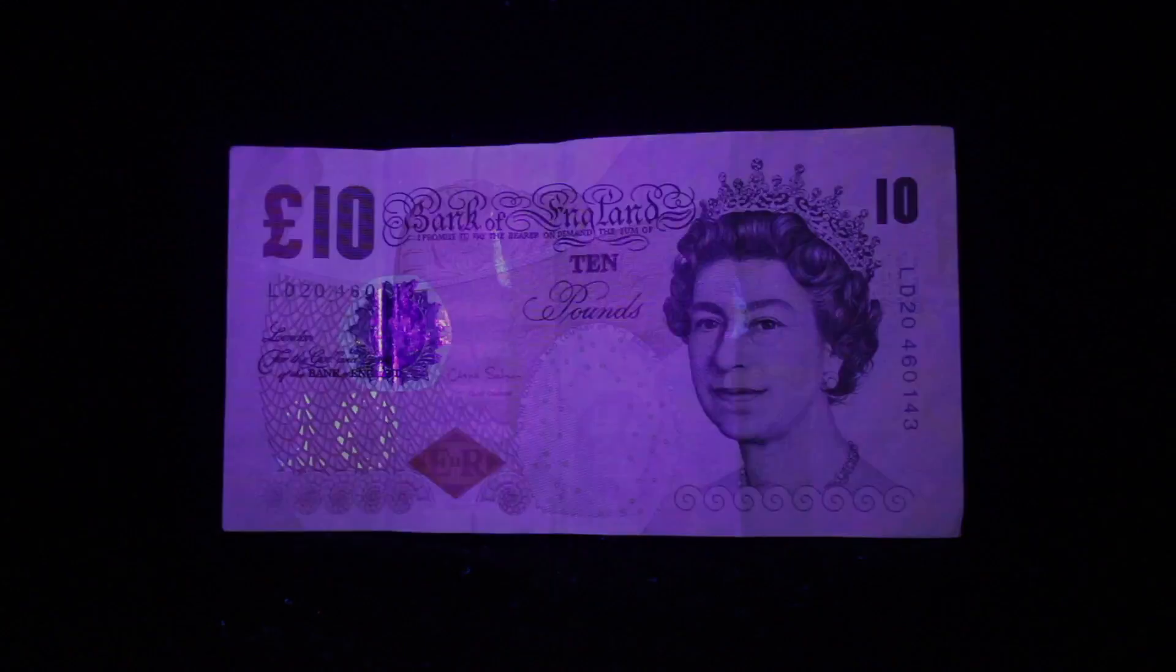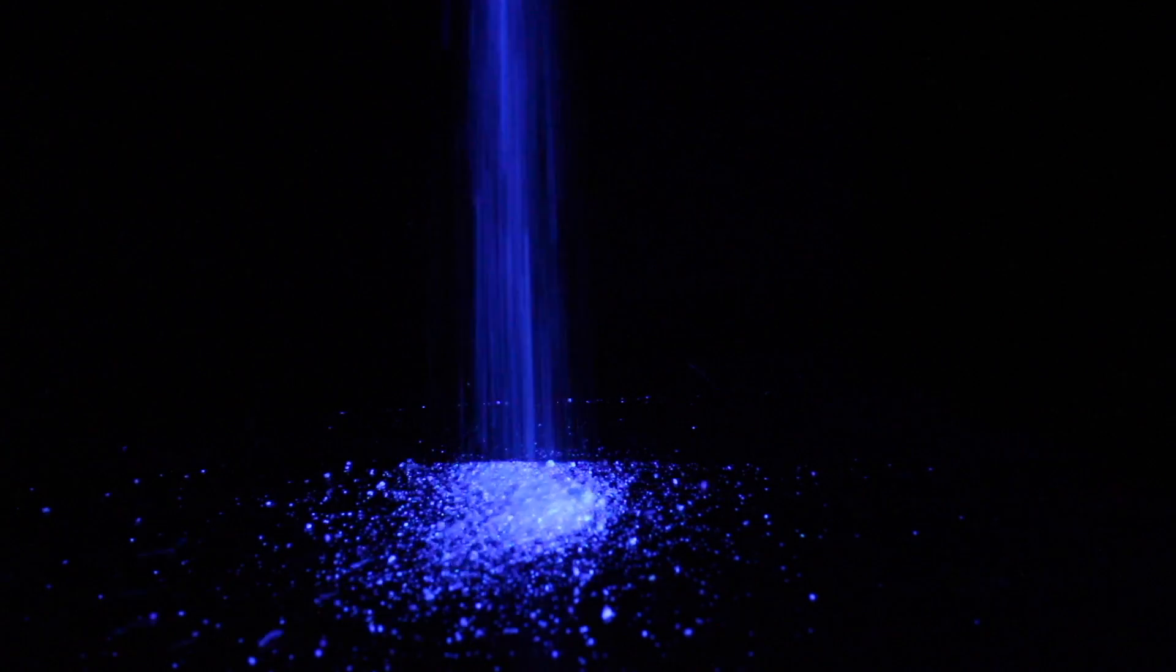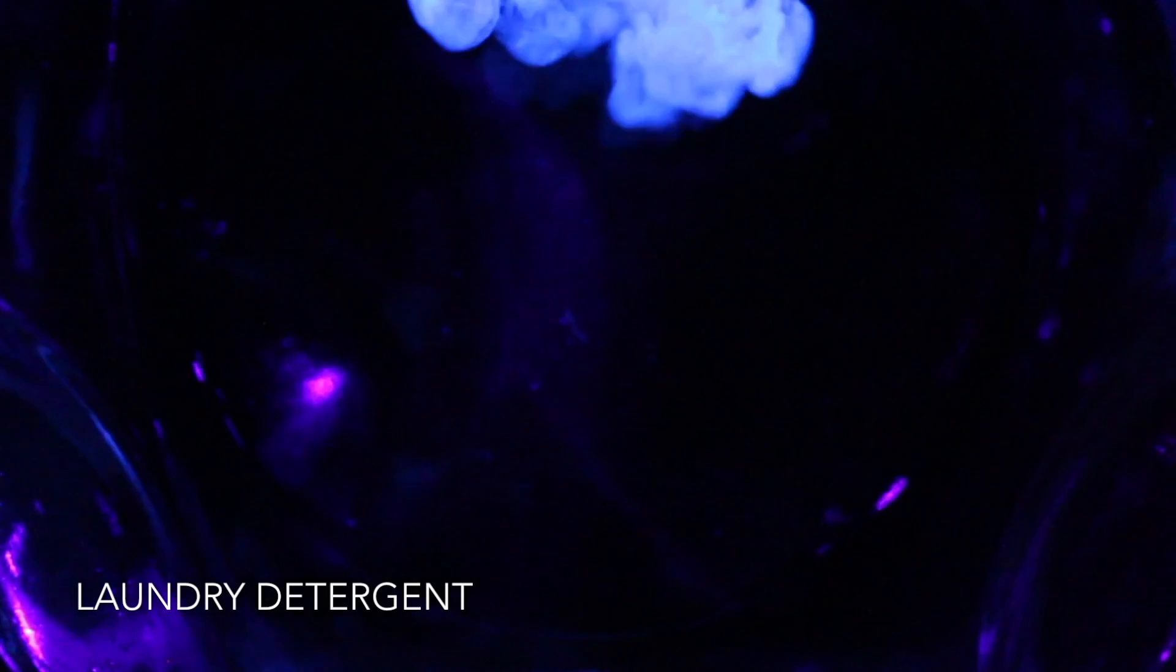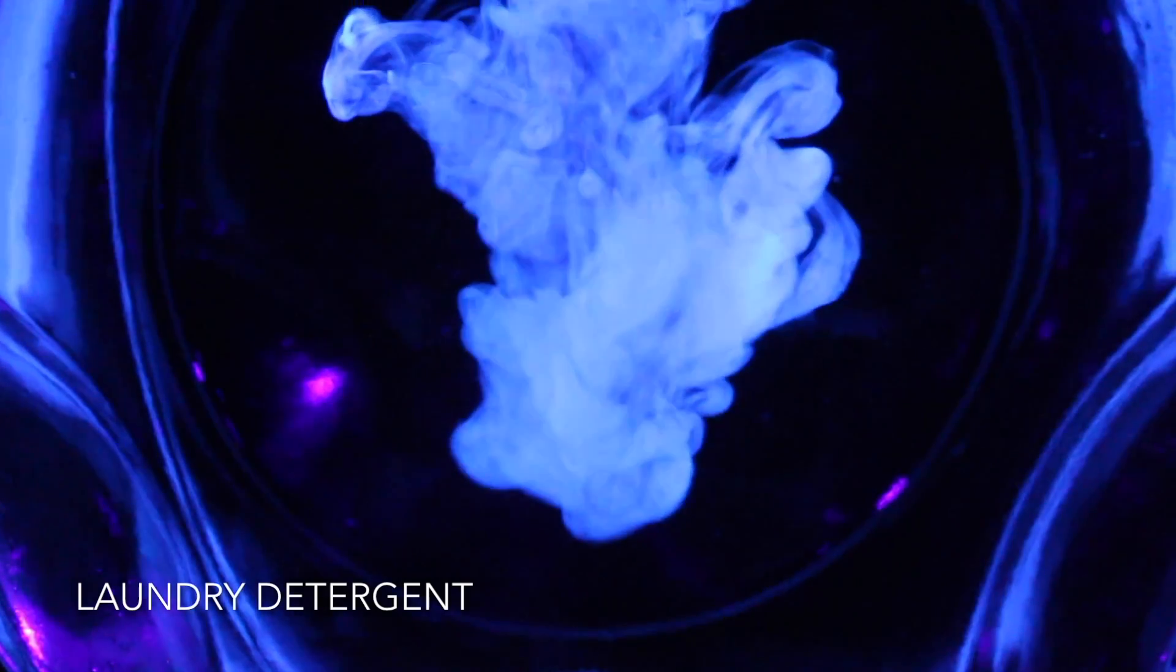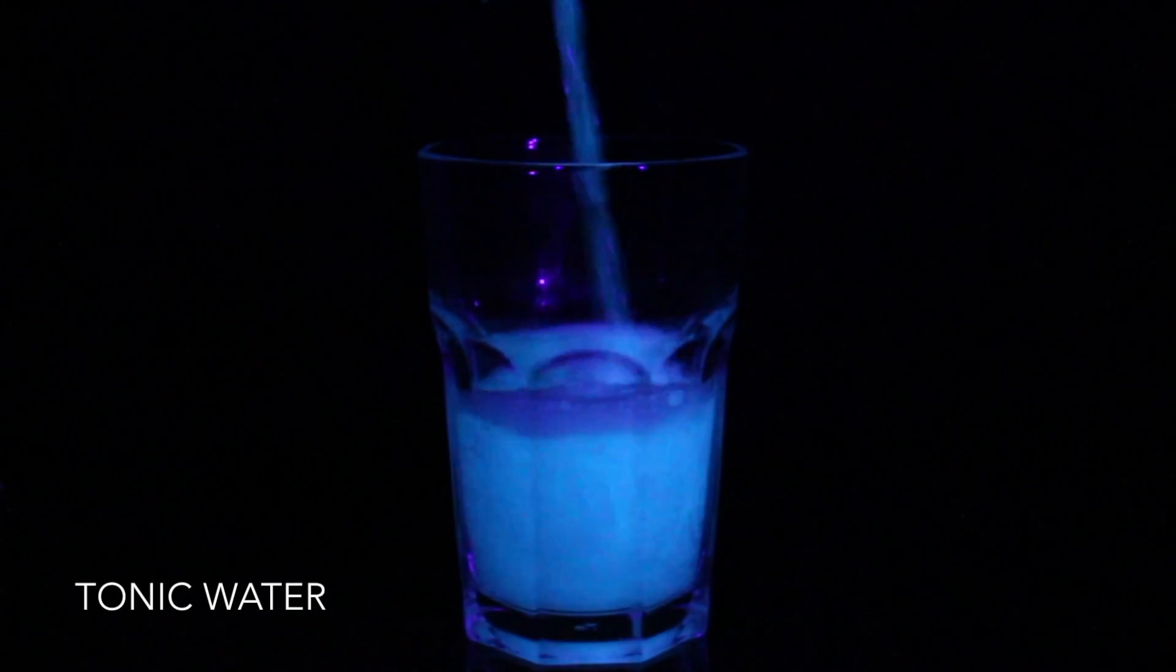Fluorescence occurs when a molecule absorbs energy from light and then re-emits the energy in the form of light at a different wavelength. Many household items are fluorescent. The optical brightness in washing powder and detergents fluoresce making clothes appear whiter. Also, tonic water contains the fluorescent molecule, or fluorophore, quinine.